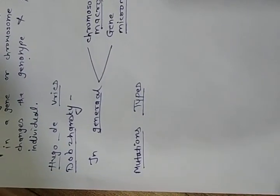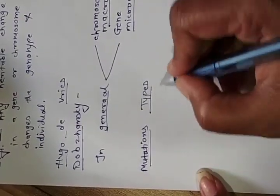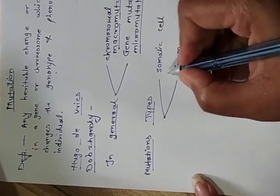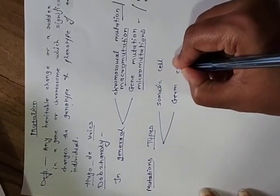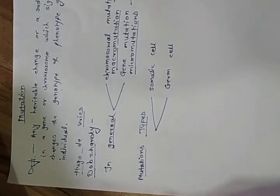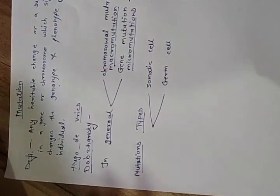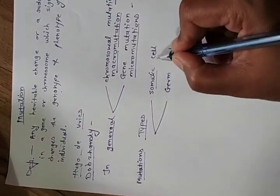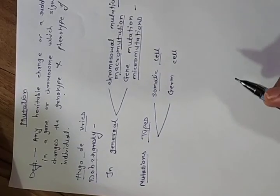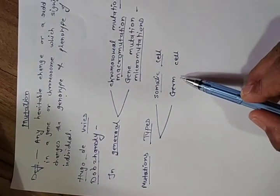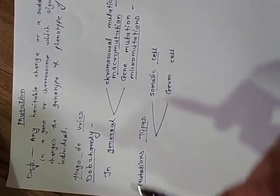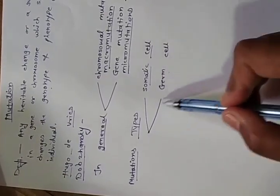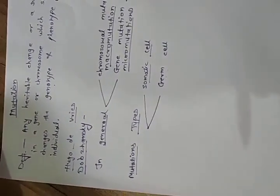Mutations can also be classified by where they occur. The human body has two types of cells: somatic cells, present all over the body, and germ cells, present only in the gonads — the testes and ovaries. If mutation occurs in a somatic cell, it is called somatic mutation. If it occurs in a germ cell, it is called germ cell mutation, and only germ cell mutations pass into the next generation.